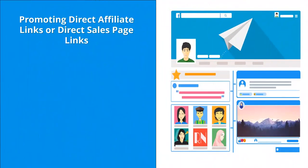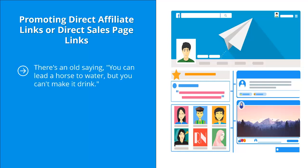Mistake four: promoting direct affiliate links or direct sales page links. There's an old saying — you can lead a horse to water, but you can't make it drink. By the same token, you can get a lot of people on Facebook to click on your links, but don't expect them to convert once they go to that affiliate sales page or your own direct sales page. Why won't people buy? After all, they did click on your ad.